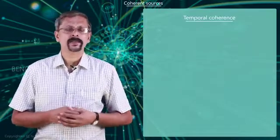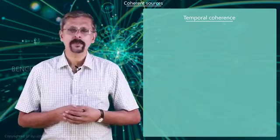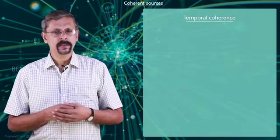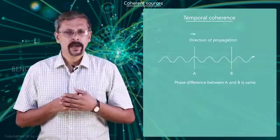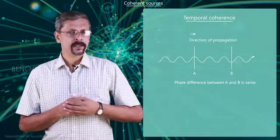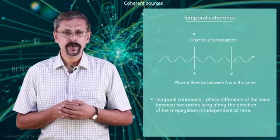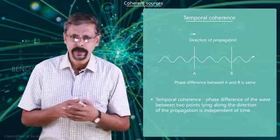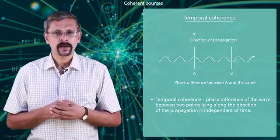Now something about temporal coherence. Temporal coherence is all about the spectral purity of a source of light. It's a measure of the correlation between the phases of a wave at different points along the direction of propagation. If the phase difference of the wave between two points lying along the direction of propagation is independent of time, the wave is said to have temporal coherence.